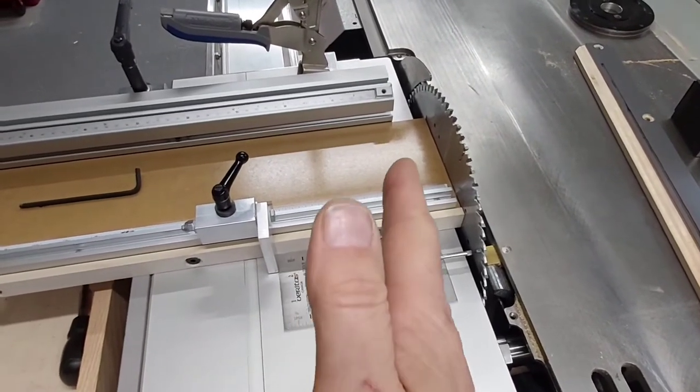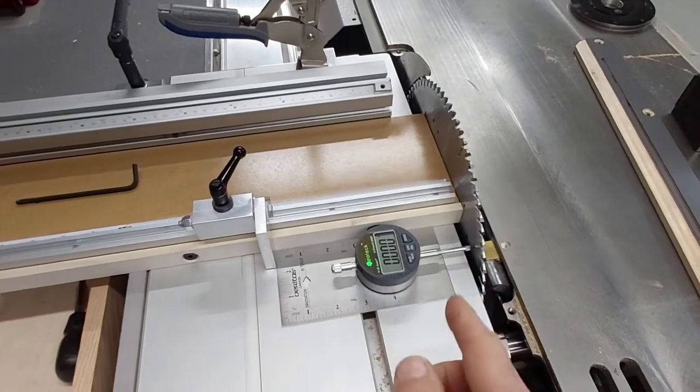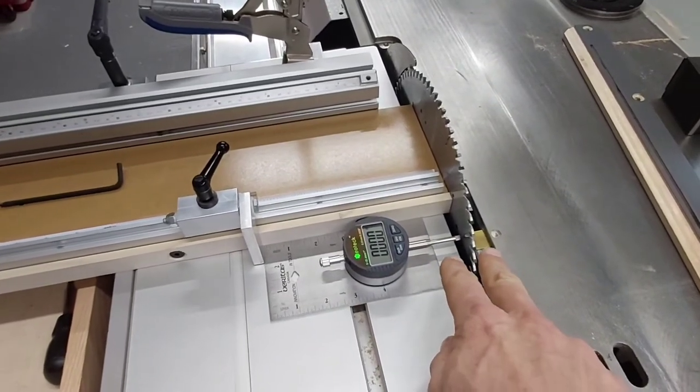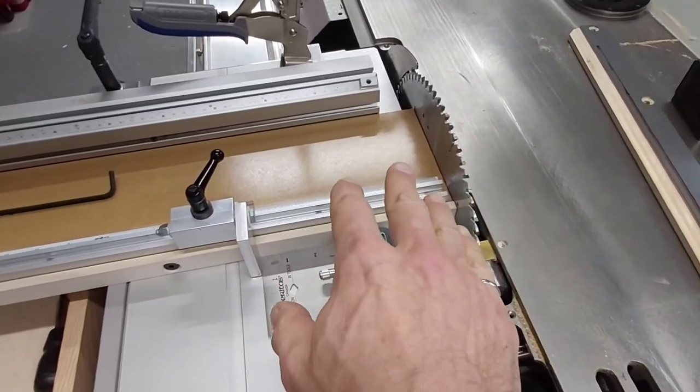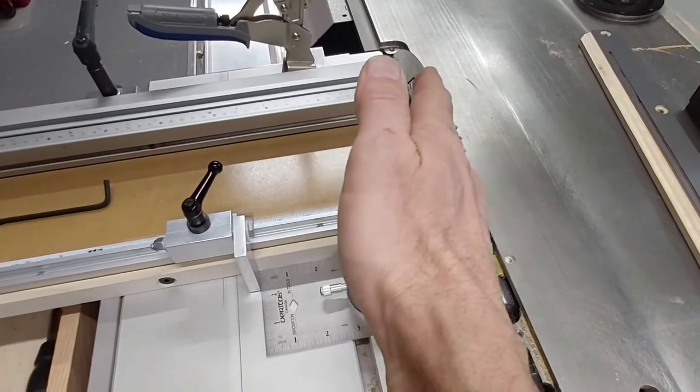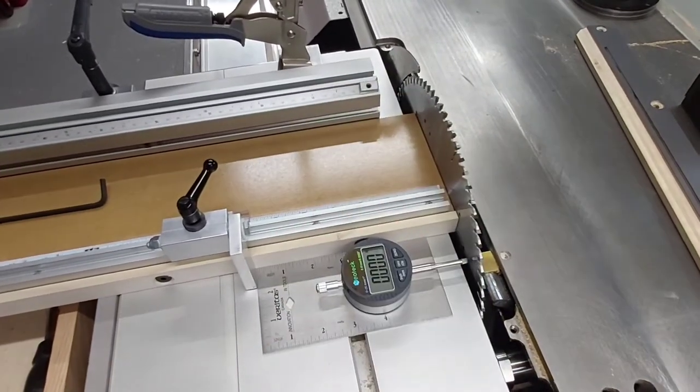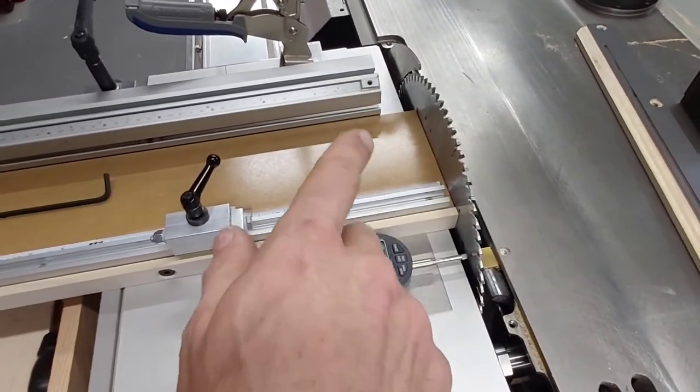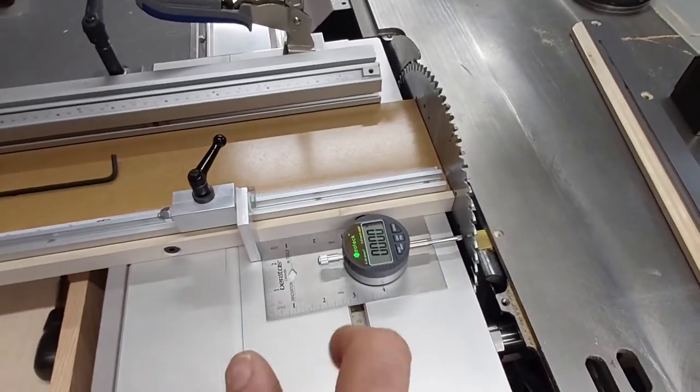You can imagine that if the slider moved towards the blade as you pushed it forward, the wood would get cut at the front. But then if the wood is stationary and you're pushing the slider and it's getting closer, that wood would bind on the back of the blade. That could lead to kickback, burning, and all sorts of other problems.